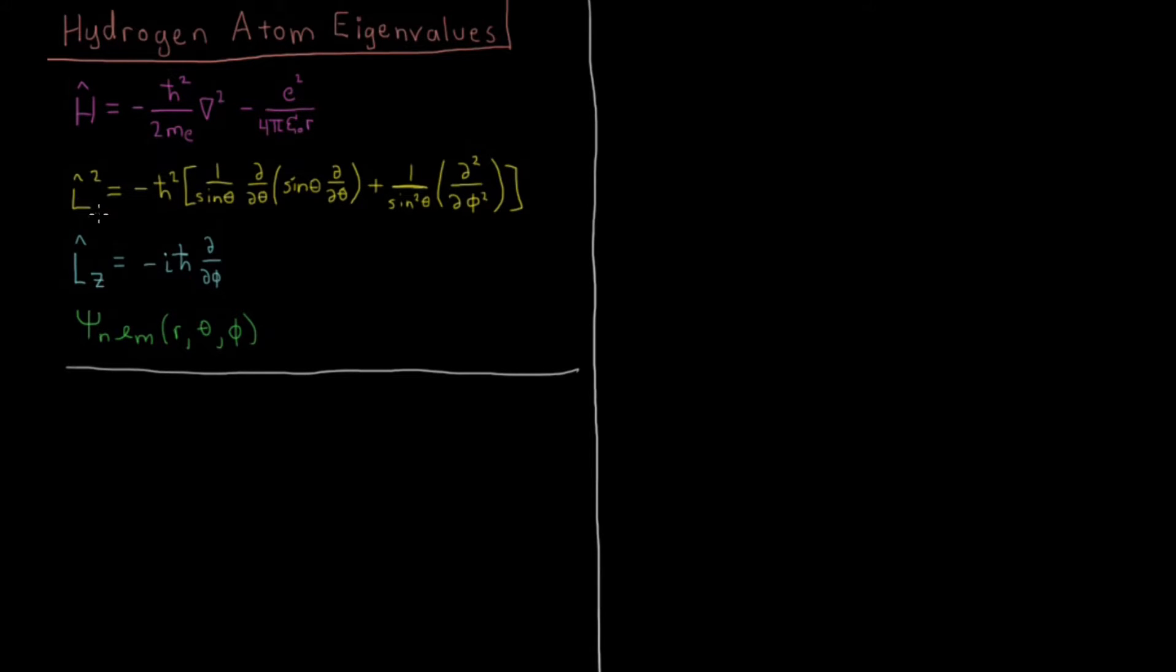And we have this L squared operator, the total angular momentum squared operator, which is minus h-bar squared times this complicated part of the Laplacian for spherical polar coordinates. These are factored out the 1 over R squared term on the 2nd and 3rd terms here, and it's without the R part, which is also in here. You can look up the total value of this Laplacian from previous videos. And we also have the component of angular momentum in the z-direction, which is just minus i-h-bar partial derivative with respect to phi, the azimuthal angle in the x-y plane.